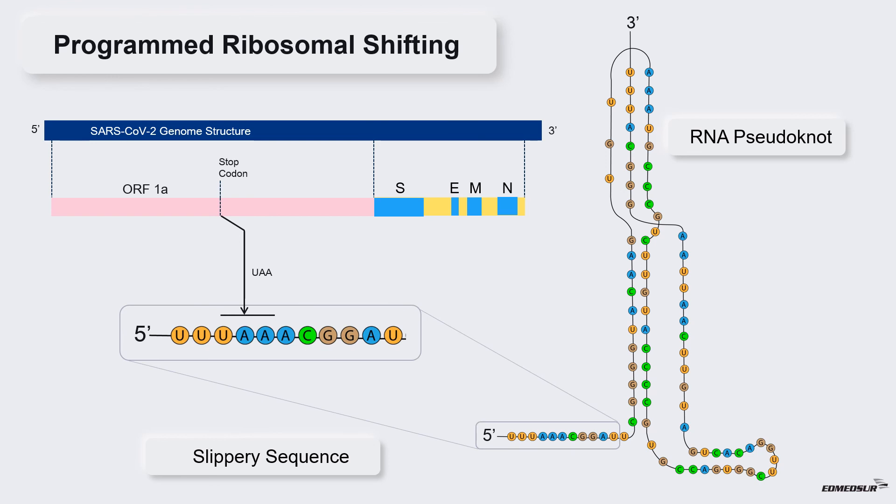If ribosome slips back by one place, then it will not identify the stop codon because of frame shifting. This happens because the stop codon UAA after minus 1 shifting is modified to UUA and AAC. As a result, it will continue to translate ORF1b genes as well producing polyprotein PP1ab.